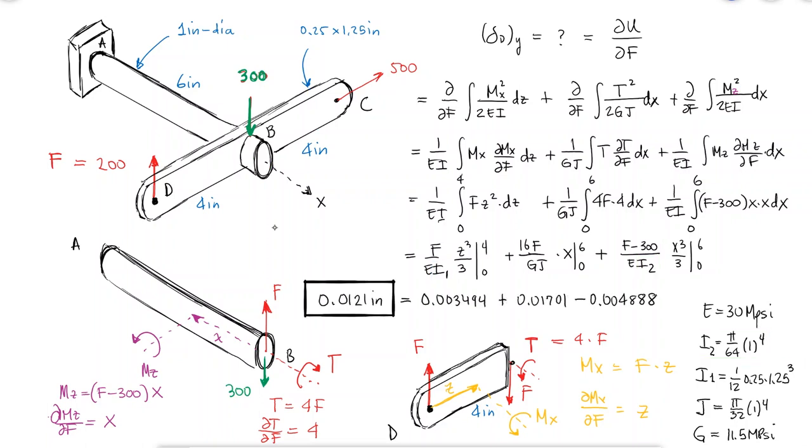This is the deflection of D in the direction of the force F, which is the same as the deflection of D in the y-axis. If we wanted to calculate the deflection in any other direction, we would use fictitious forces in the x or z-axis. Thanks for watching.